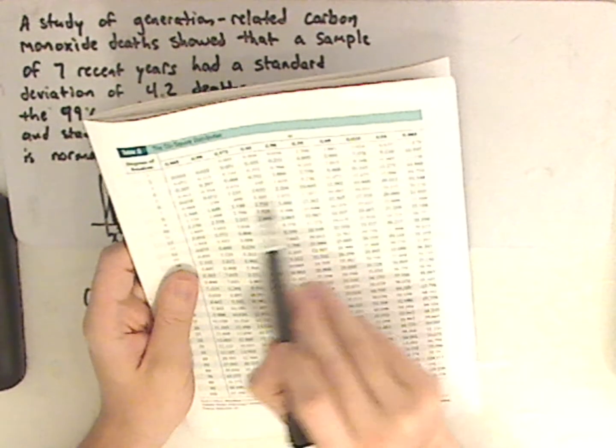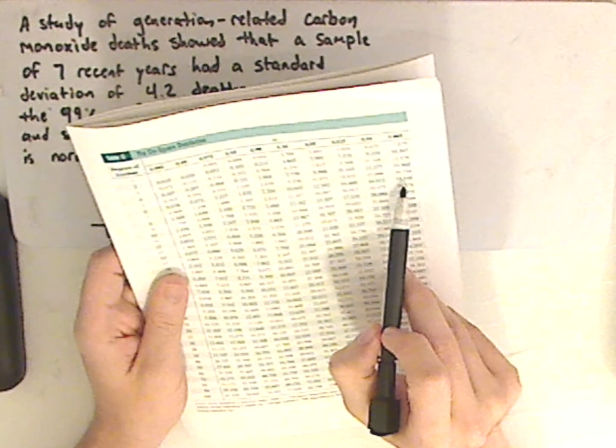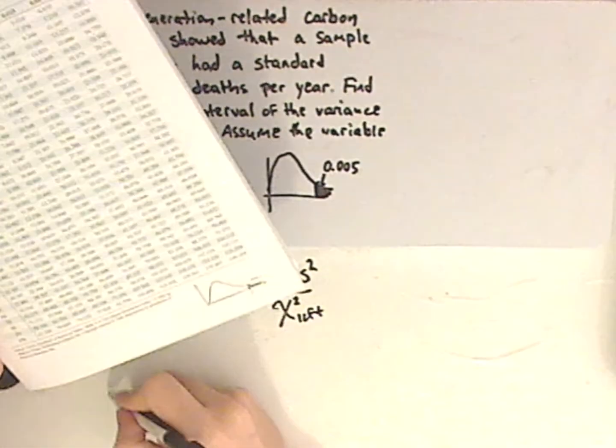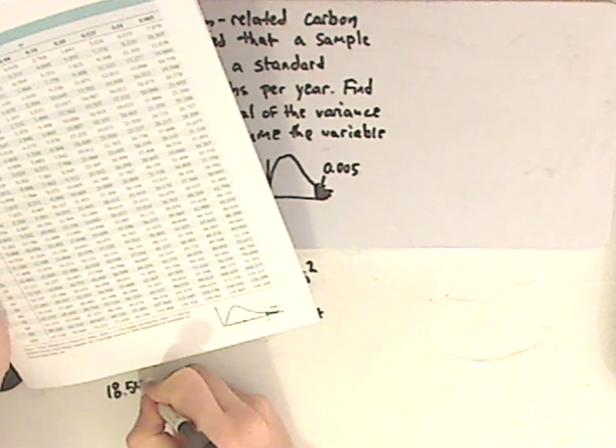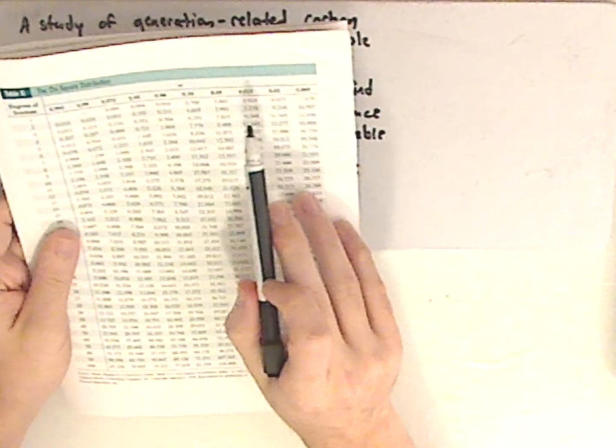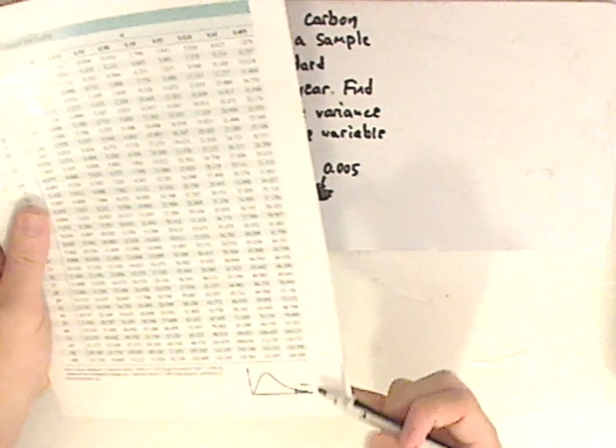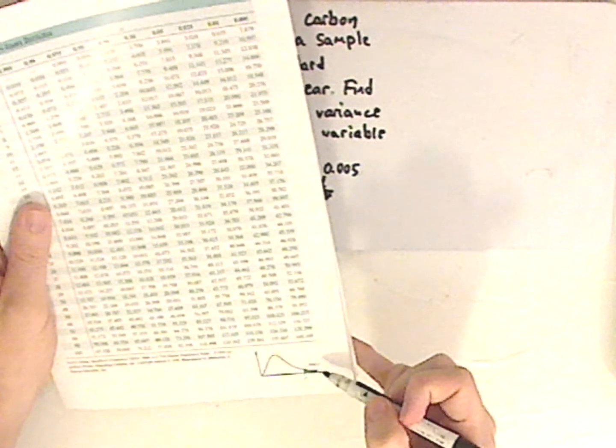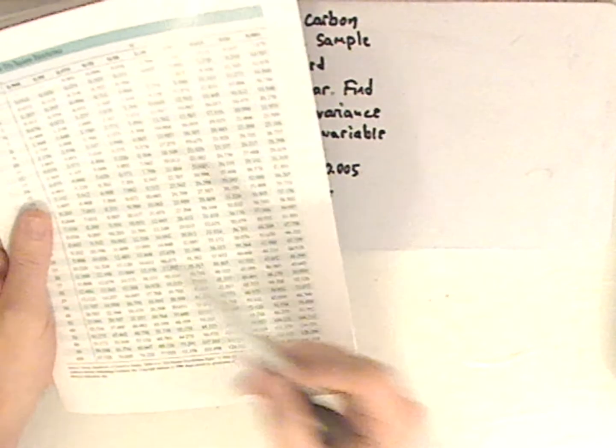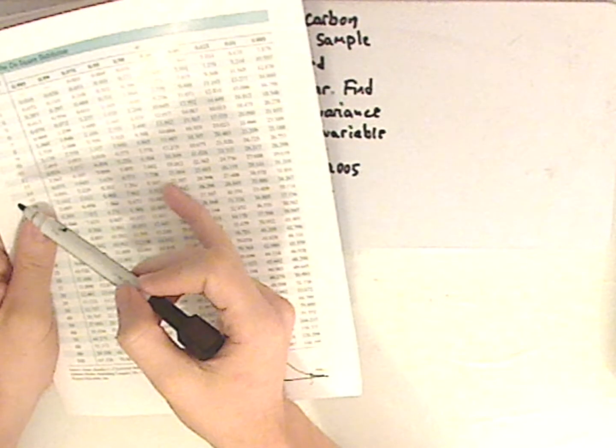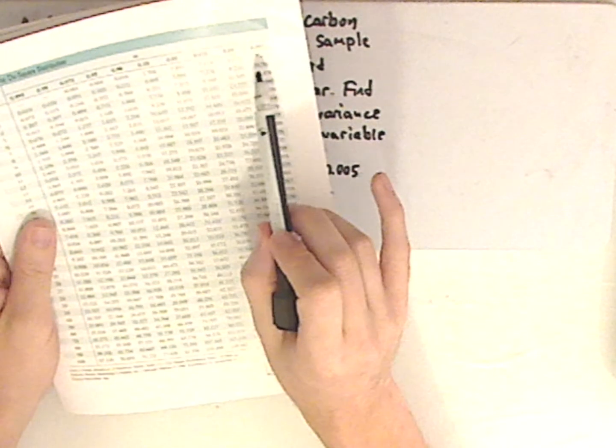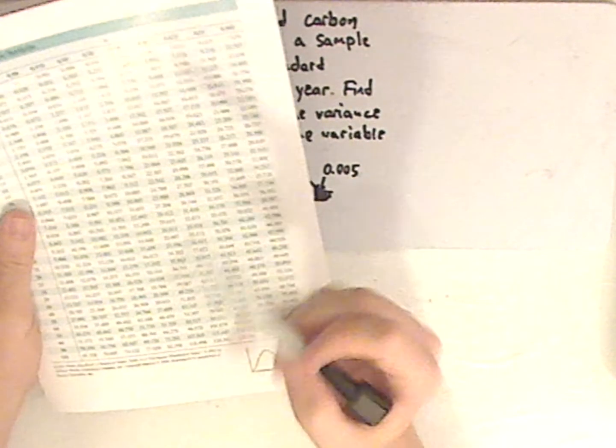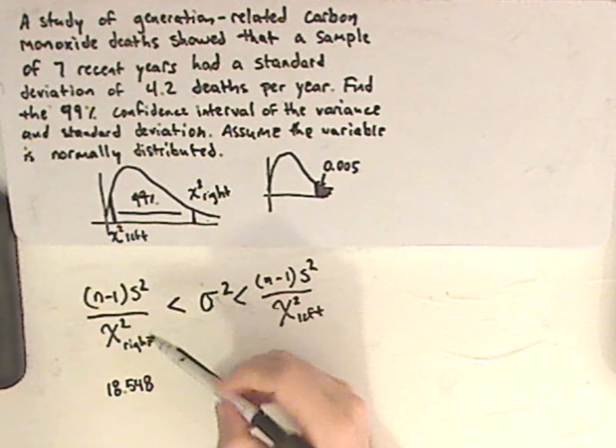Well, 0.005 and 6, I get 18.548. It might be a little hard to see on the table, but on top you have the area to the right of it, and then on the side you have your degrees of freedom. So where 7 and 0.005 line up, that's my chi squared right.